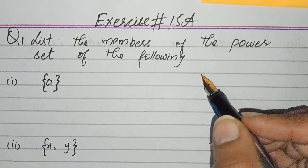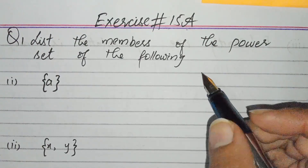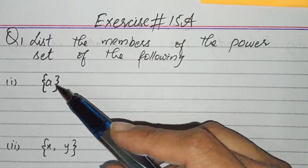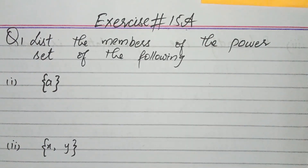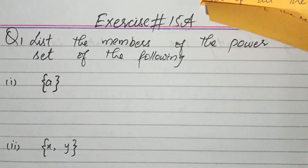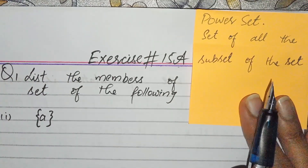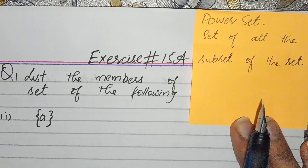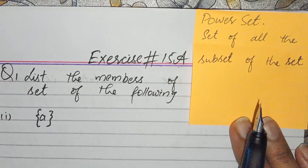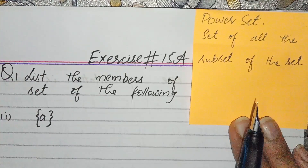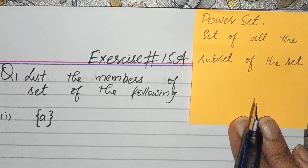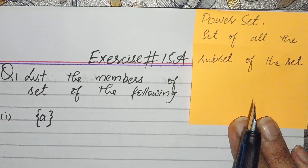We have to list the power set. What is the power set? The power set is the set of all the subsets of a set. When we write all the subsets of a set, this is called the power set.